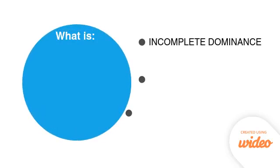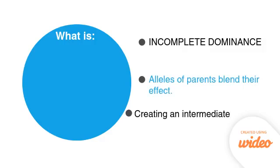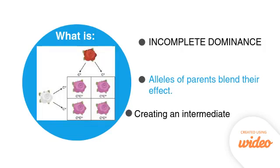What is incomplete dominance? Incomplete dominance happens when the alleles of the parents blend their effects, creating a sort of intermediate in the offspring. If we look at the picture on the left, we can see that the red and the white parents have offspring that express a pink color. The red and the white blend to give that intermediate — that pink color.